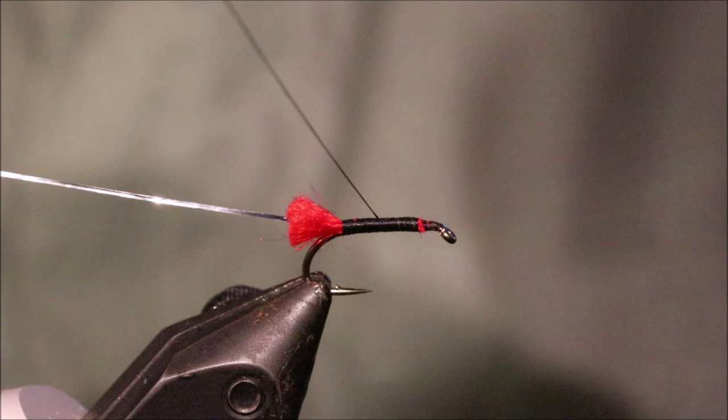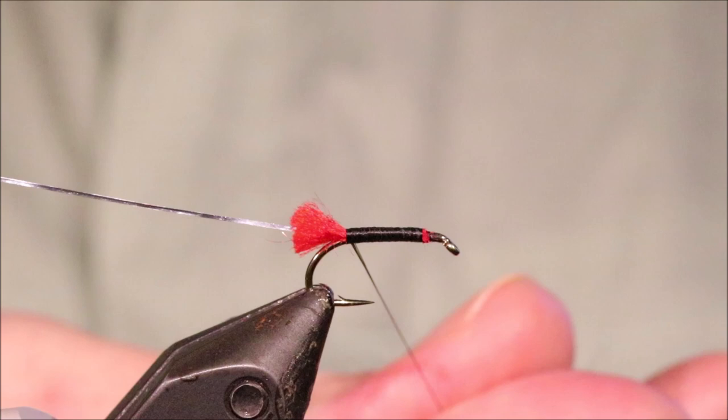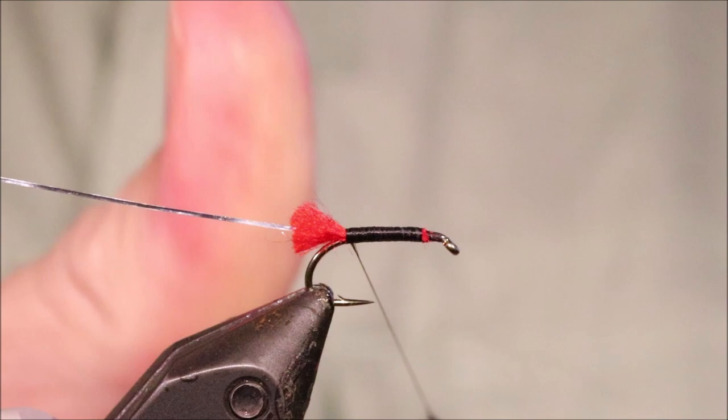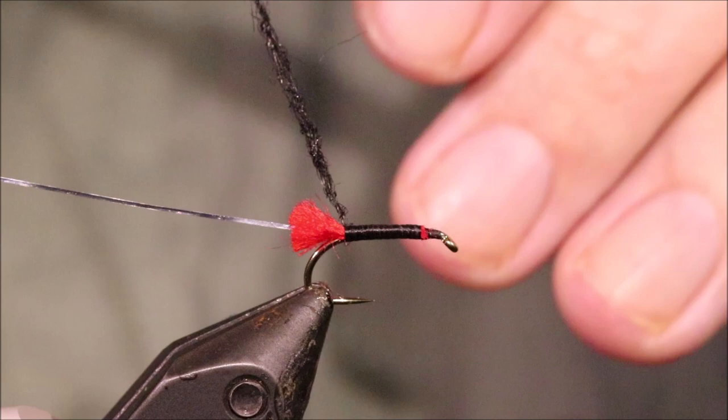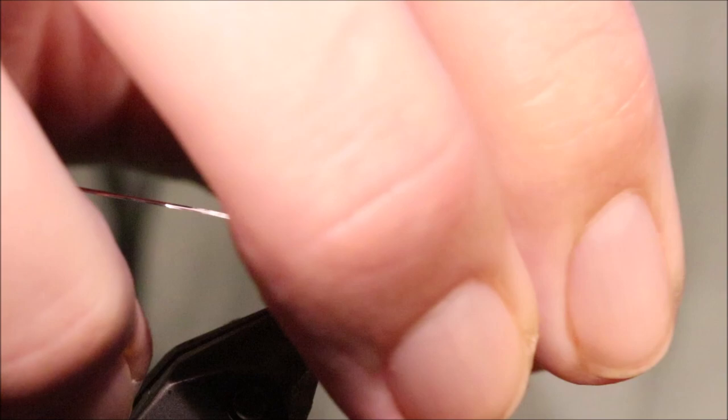Just tie that in. Body has black seal fur. You can obviously use another black dubbing if you want. It doesn't really matter. Although I do like seal fur. There is something about the kind of straggly effects you get when you brush it that I quite like when the wet flies. So you sweep it in and it's going forward towards the rear.